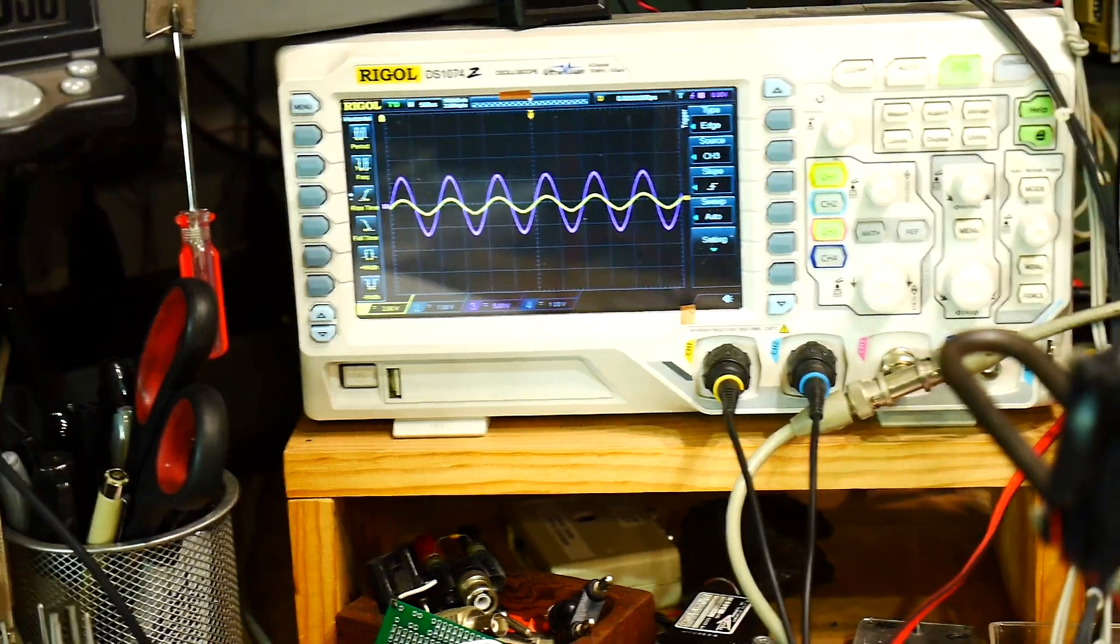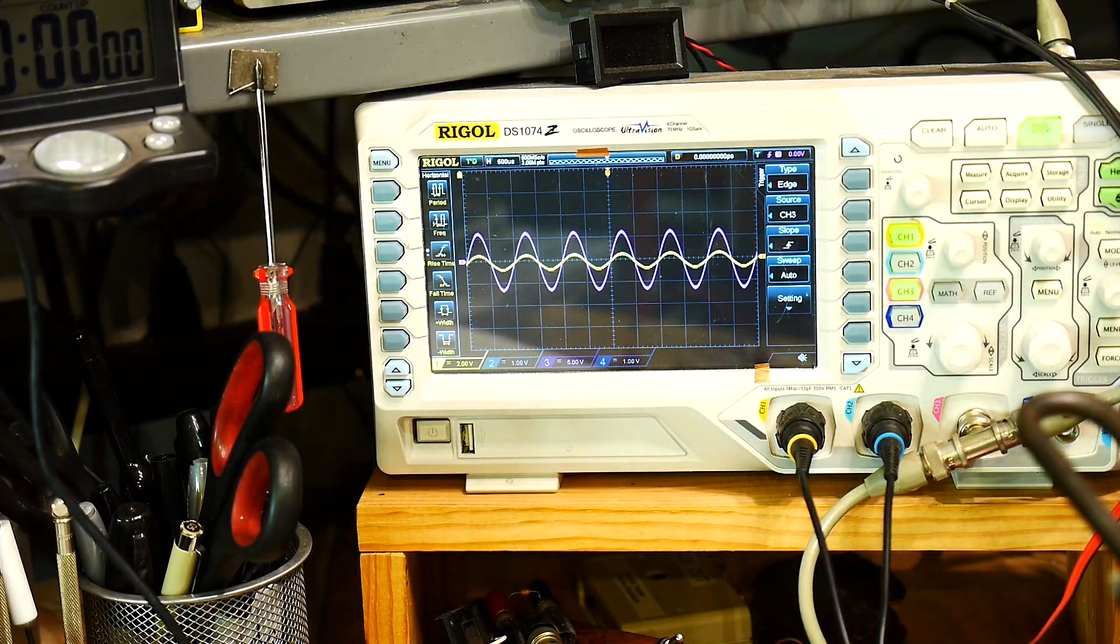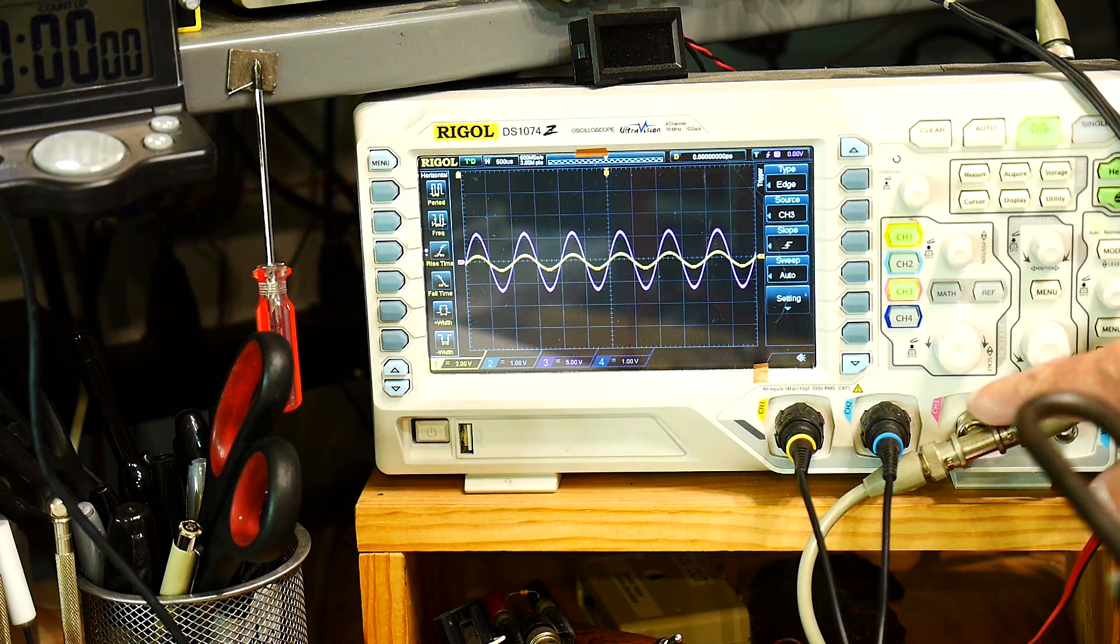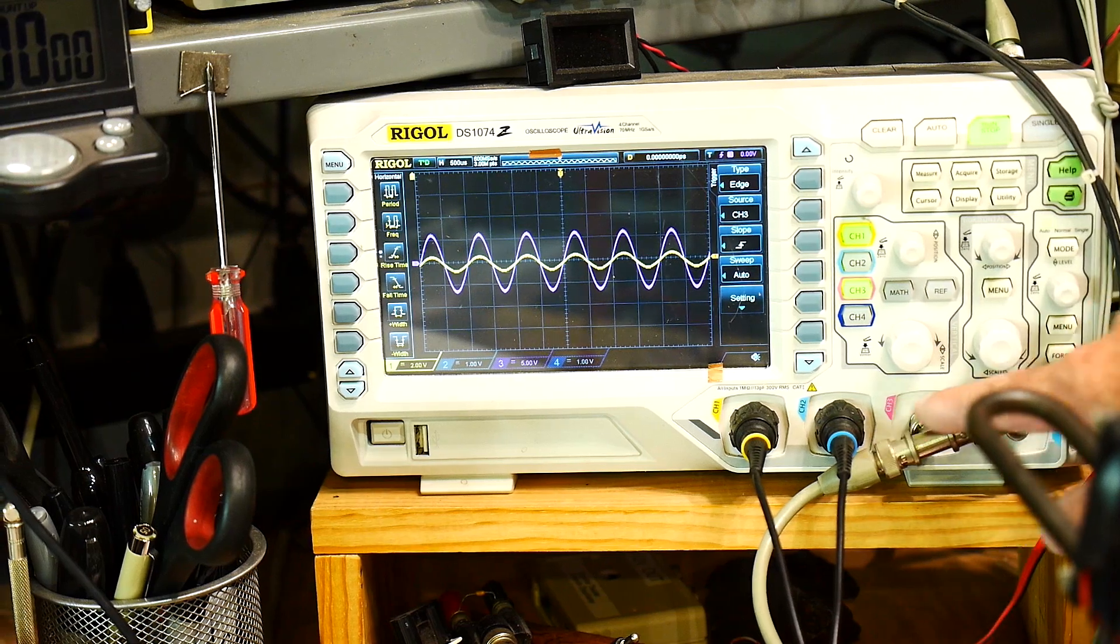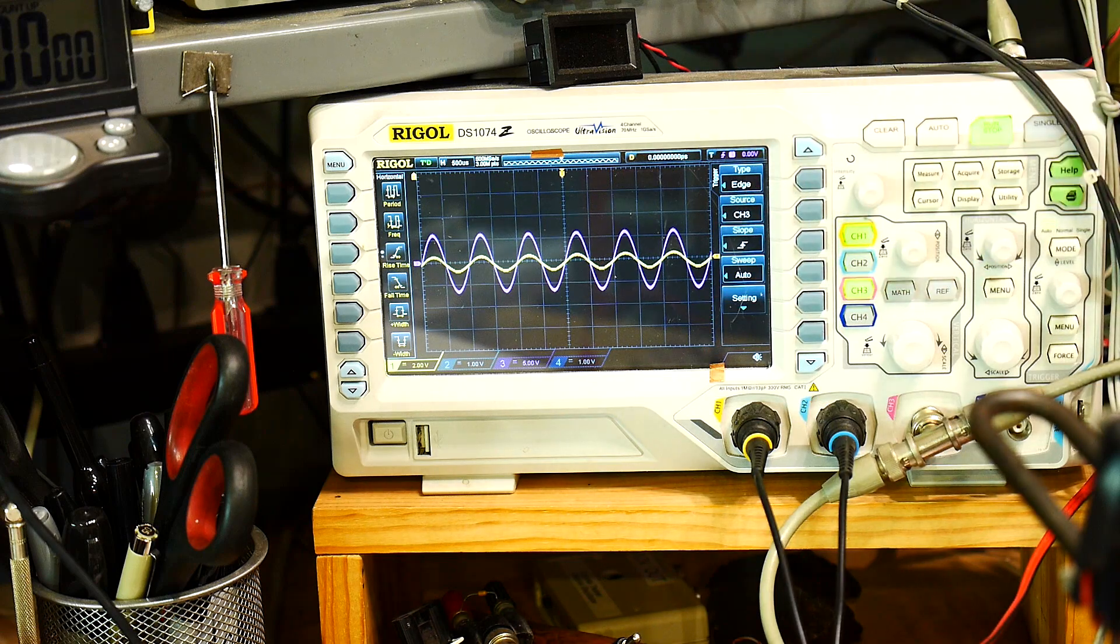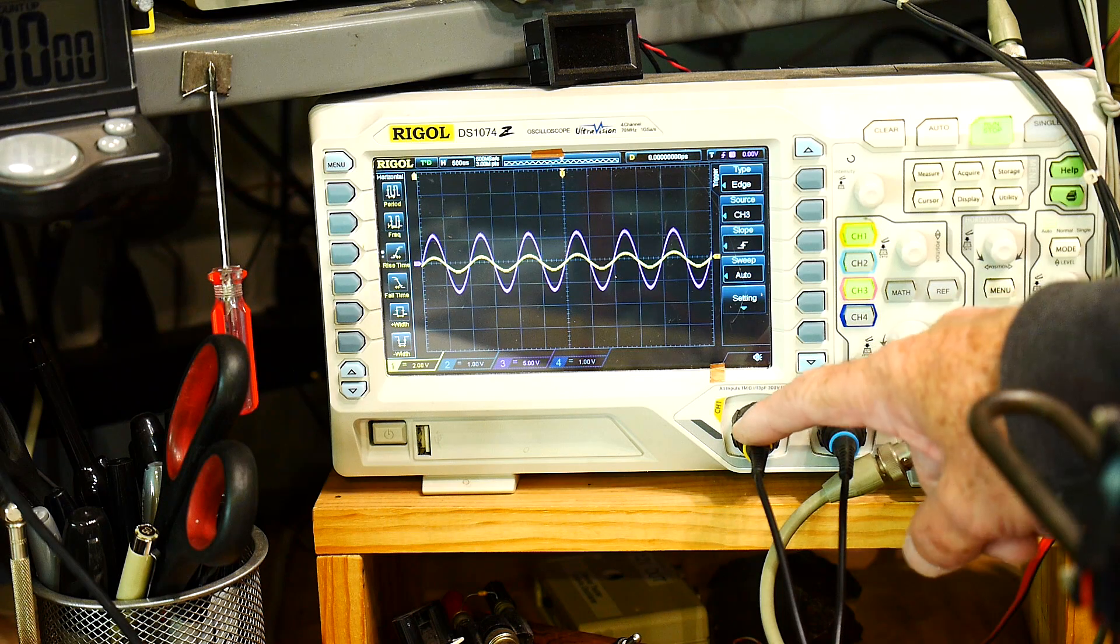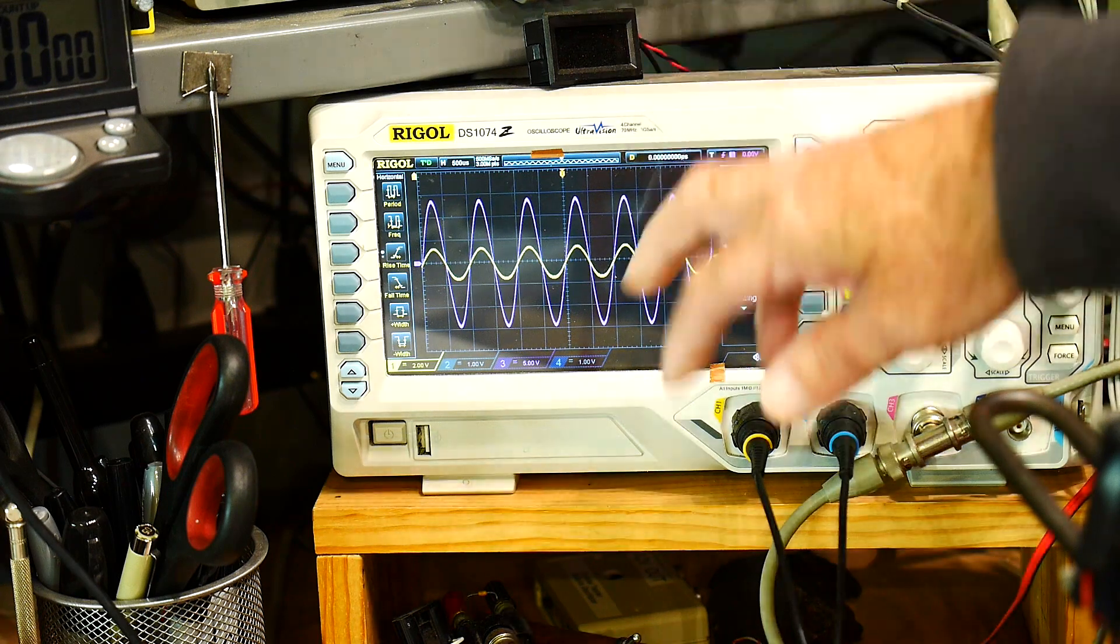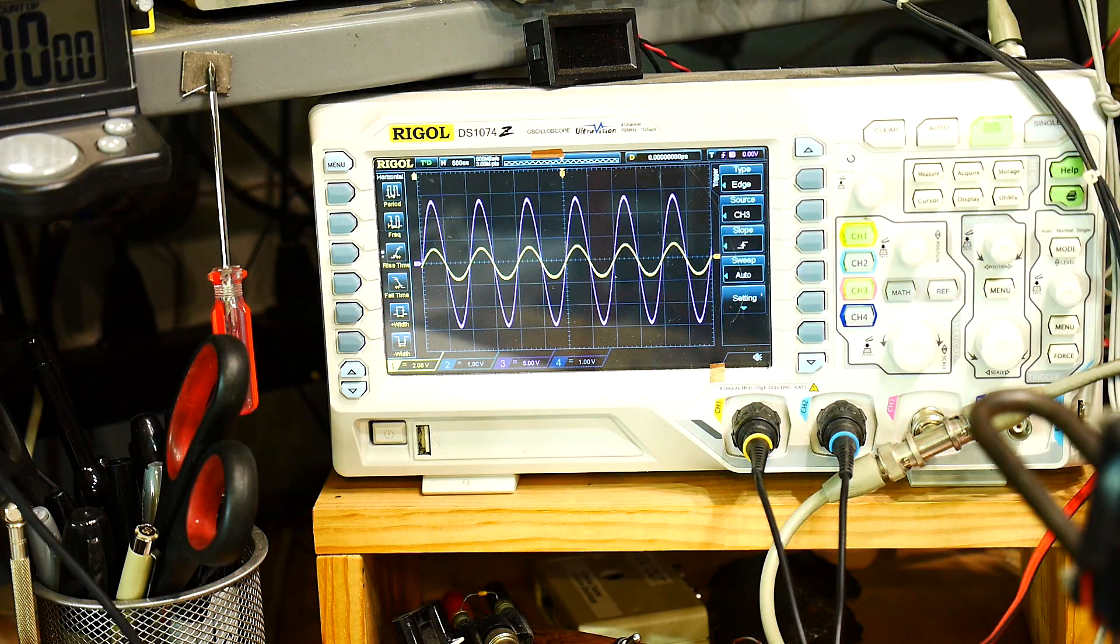So we have the purple trace is the input. There's a T connection here. Is that on camera? Yeah, it's on camera. Just barely. There's a T connection here. So the function generator goes into the scope and then over to the input of the op amp. And then the output is monitored with channel one, which is in yellow. So if we increase the amplitude of the input, there are different scales here. So we have five volt. It's really hard for me to read this. Yellow is two volts per division.